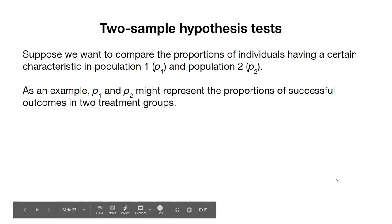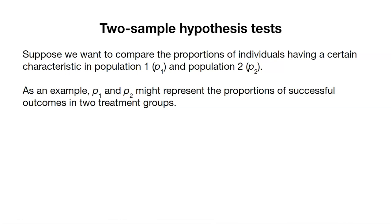In this case, we want to compare the proportions of individuals of a certain characteristic in population 1 and in population 2. As an example, P1 and P2 might represent successful outcomes in two different treatment groups.